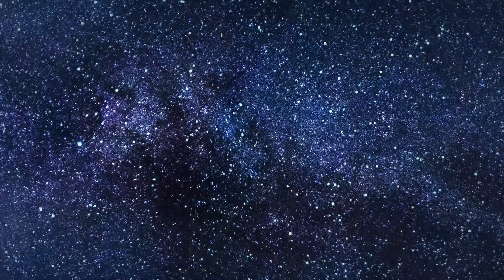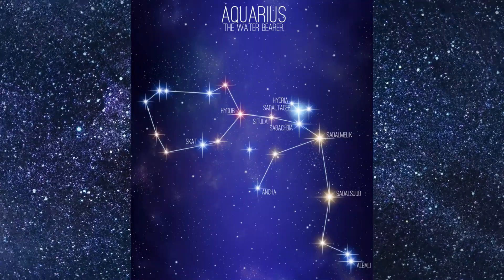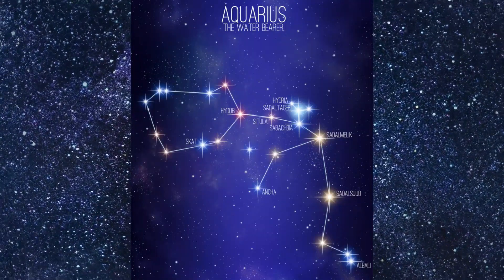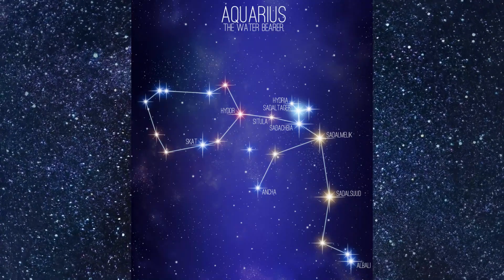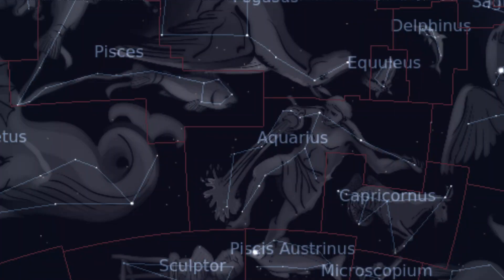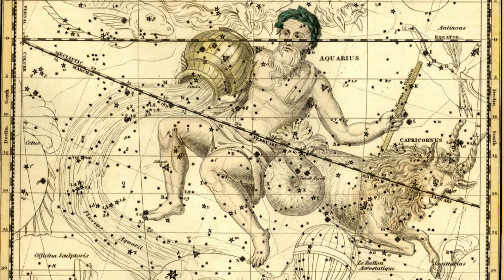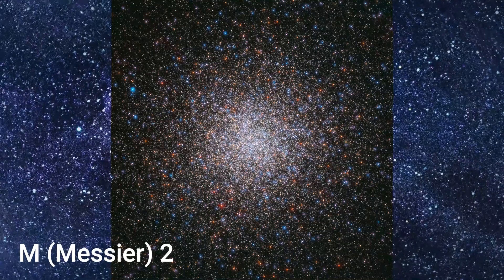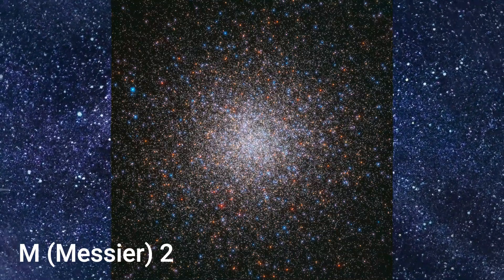Today we're going to look at the constellation of Aquarius. It's a short look — there's not a lot to say about Aquarius the water bearer. It's the 10th largest constellation but one of the faintest of the zodiac constellations, lacking any stars brighter than the third magnitude. It does have about 12 stars of the fourth magnitude, and it's home to the bright globular cluster Messier 2.